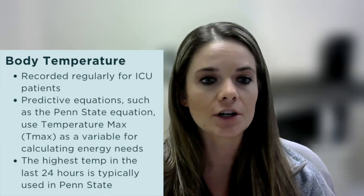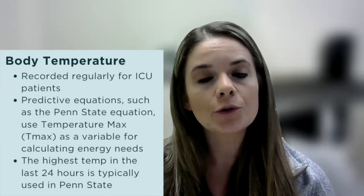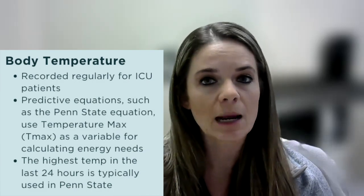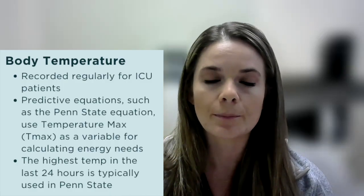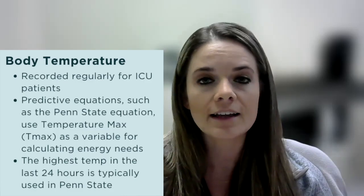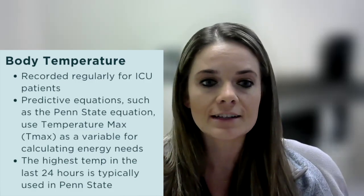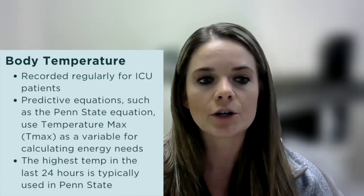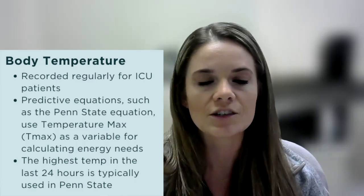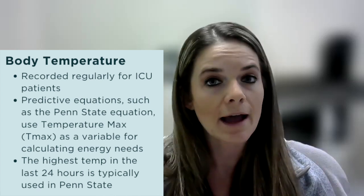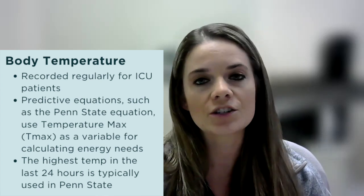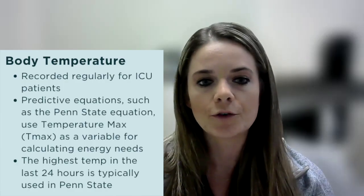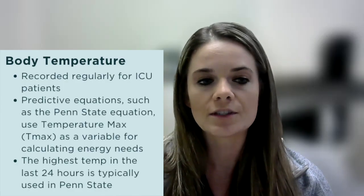Next, let's review body temperature. Nurses record a patient's body temperature several times per day on the ICU flow sheet. This is useful for the ICU dietitian who uses an equation such as the Penn State equation to calculate estimated energy needs. The Penn State equation requires the clinician to plug in the patient's highest temperature, or Tmax, into its formula. Generally, the patient's highest temperature in the last 24 hours is used in this equation.